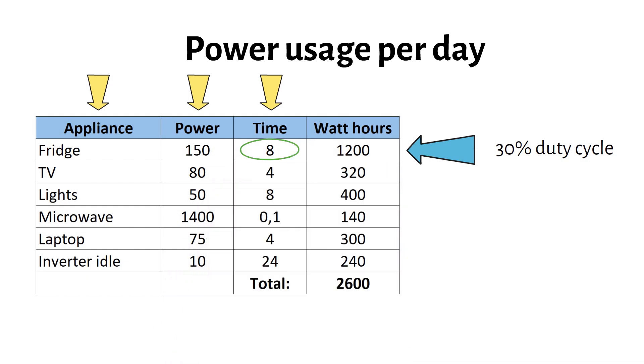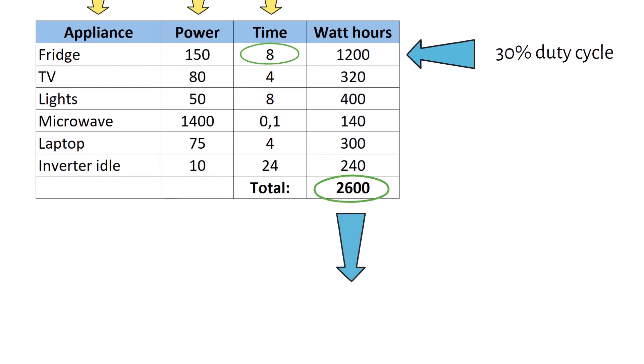A DC fridge will be better. When I add everything up, I get 2600 watt-hours per day. Next, I want 3 days of autonomy. I multiply the daily use by 3. That gives me 7800 watt-hours total.